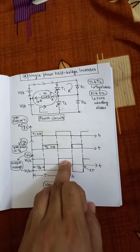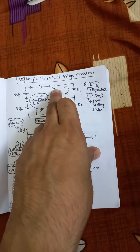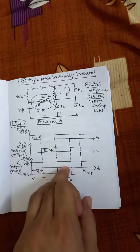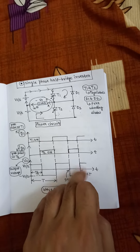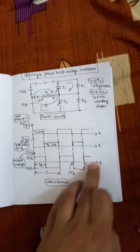In the same way, when T2's gate pulse is removed and the gate pulse is applied to T1, we again get positive Vs/2, and then again negative Vs/2, and the cycle repeats.